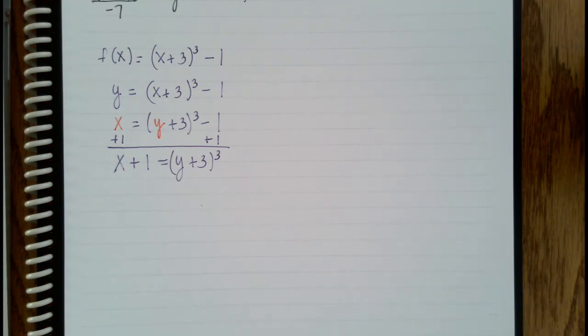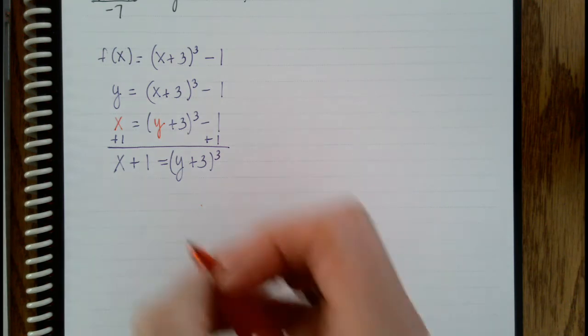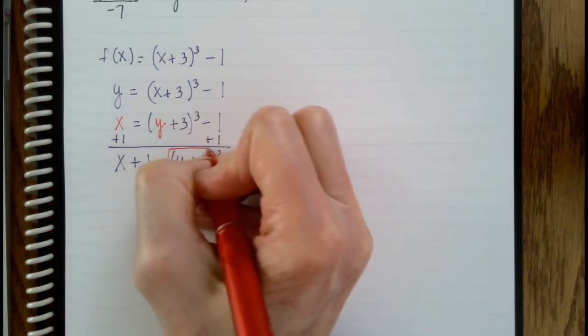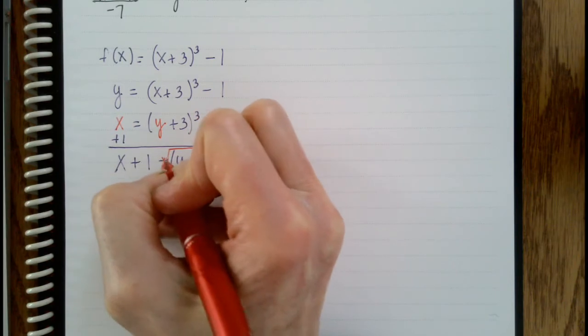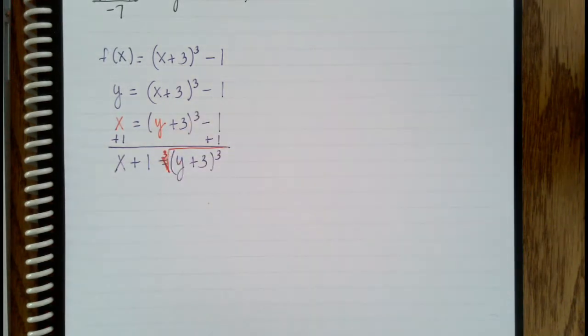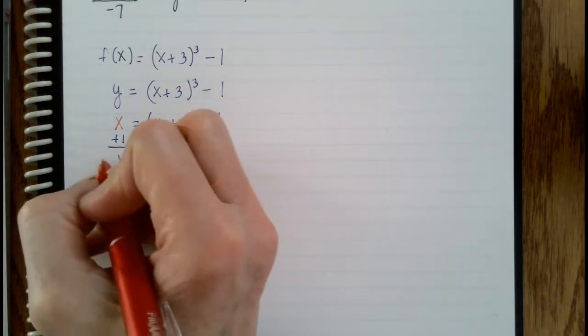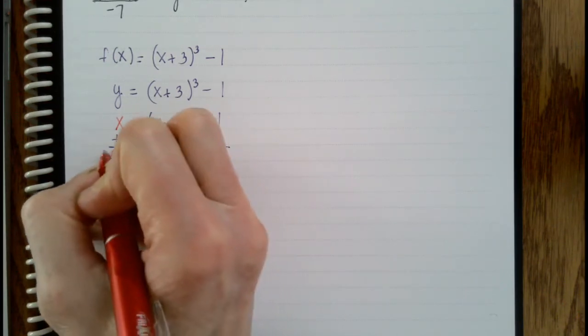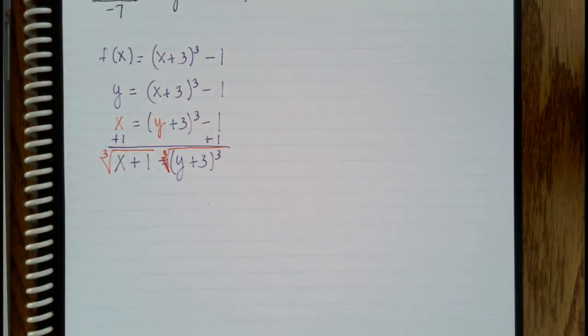So the way that we get rid of cubed is we use the inverse operation, which is cube rooting. I'm trying to write it well. I'm not doing very well. But there's a 3 in the checkmark part of the radical. We're taking the cubed root of the right side of the equation, which consequently means that we're going to take the cubed root of the left side of the equation.